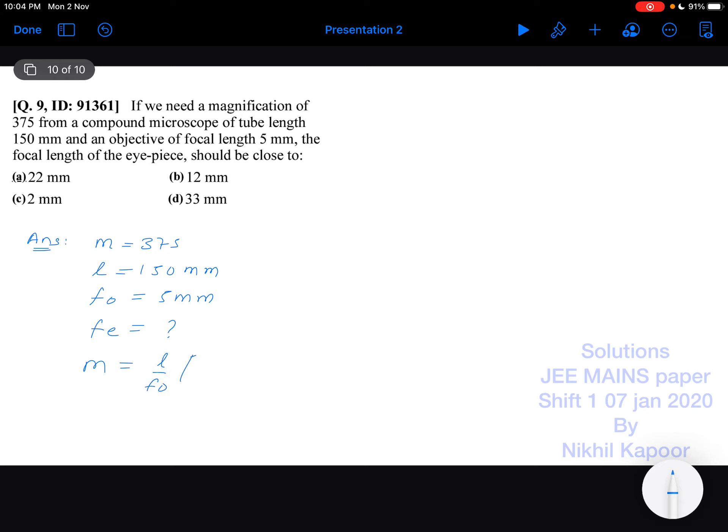So as magnification, when length is given, it will be L upon fo in bracket 1 plus d upon fe. So first of all, let's discuss how this formula has appeared here. So here this is the objective and that's the eyepiece. The object is kept very close to the focus of objective.